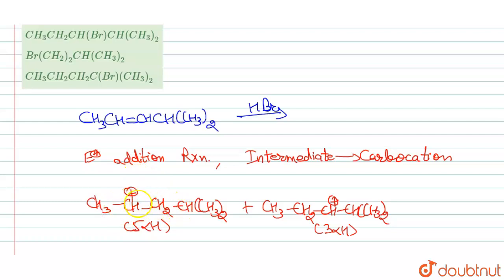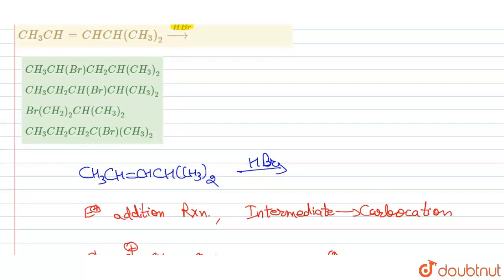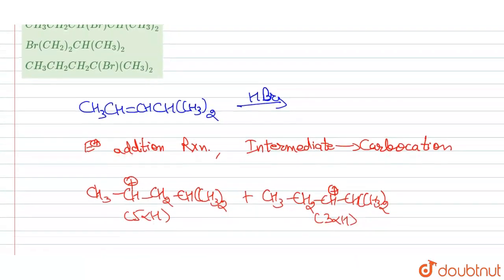When this H shift, hydride shift takes place, carbocation will be generated here. Then how many alpha H? Then 3 alpha hydrogen will be there. How many? 3 alpha H.